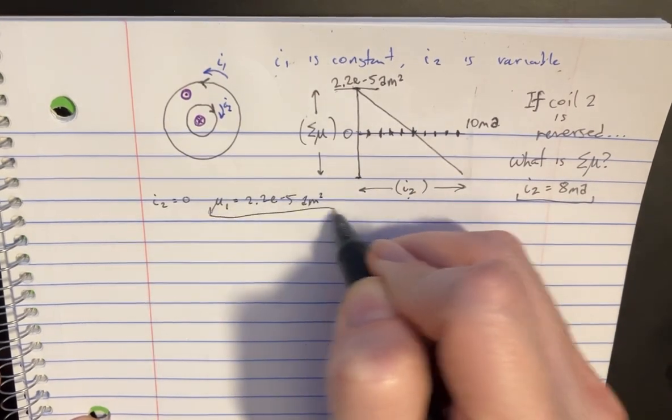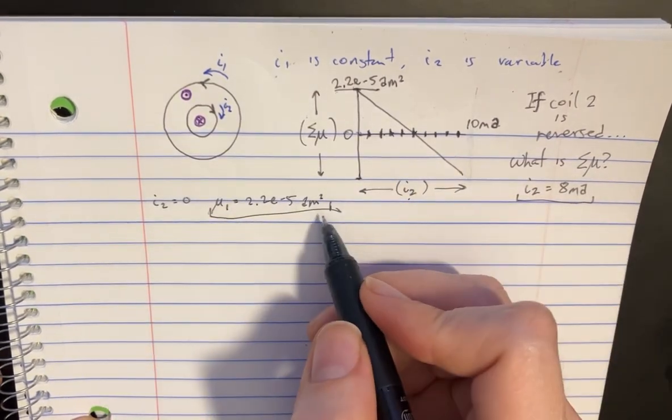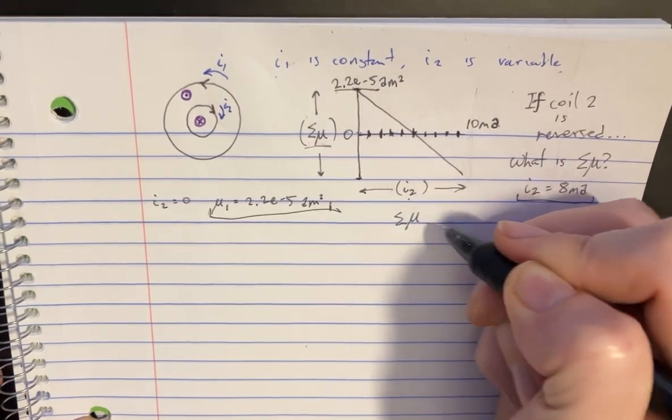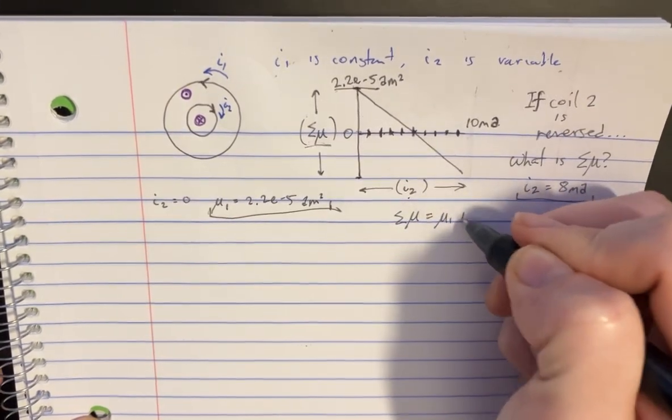So this is one little piece of information we can gather from that. But the net is going to be M1 plus M2.